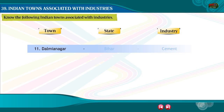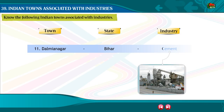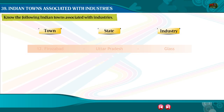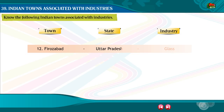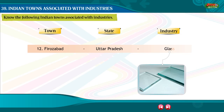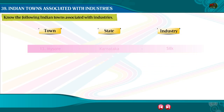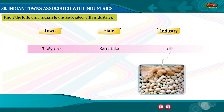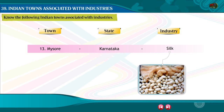11. Dalmianagar, Bihar — Cement. 12. Firozabad, Uttar Pradesh — Glass. 13. Mysore, Karnataka — Silk. 14. Narora, Uttar Pradesh — Atomic Power.